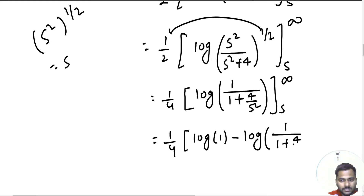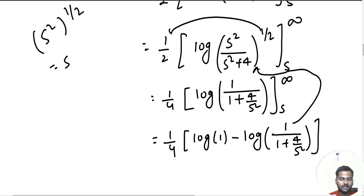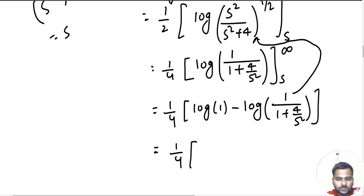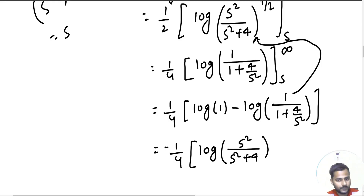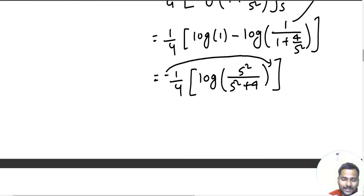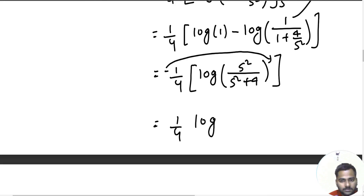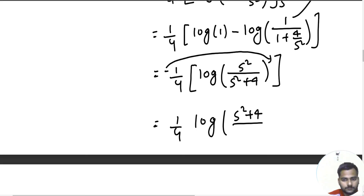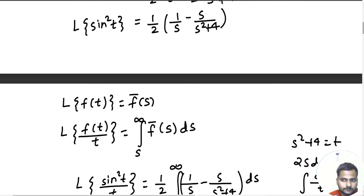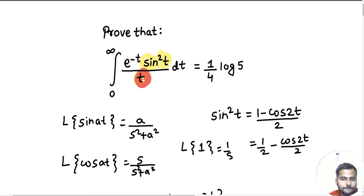Since log 1 is 0, we take the minus sign out and get minus log[s²/(s² + 4)]^(1/2). Taking the minus sign to the power flips the fraction, giving (1/4) log[(s² + 4)/s²]. So the Laplace transform of sin²t/t equals (1/4) log[(s² + 4)/s²].